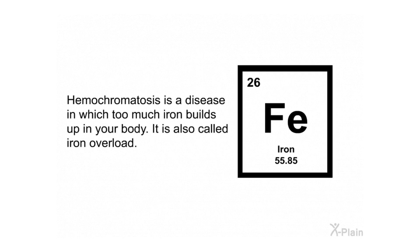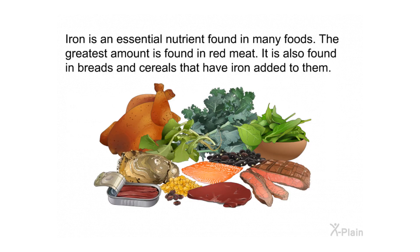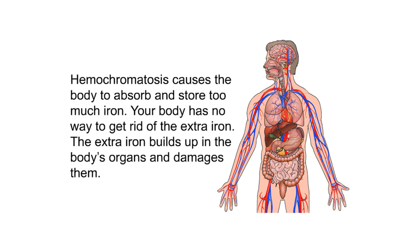Hemochromatosis is a disease in which too much iron builds up in your body — it is also called iron overload. Iron is an essential nutrient found in many foods; the greatest amount is found in red meat and also in breads and cereals that have iron added to them. Hemochromatosis causes the body to absorb and store too much iron, and the body has no way to get rid of the extra iron, which builds up in the body's organs and damages them.